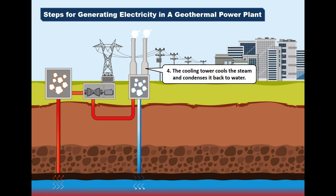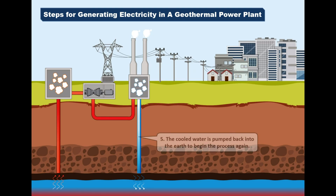Number 4: The cooling tower cools the steam and condenses it back to water. Number 5: The cold water is pumped back into the earth to begin the process again.